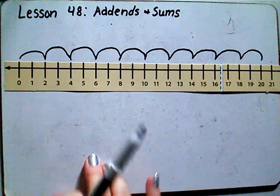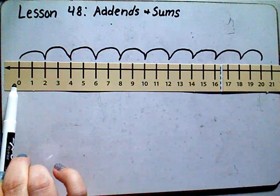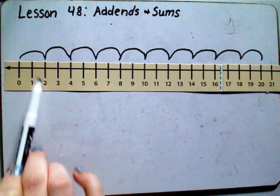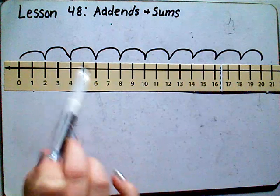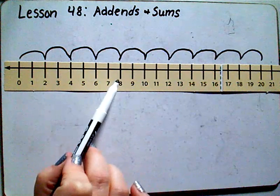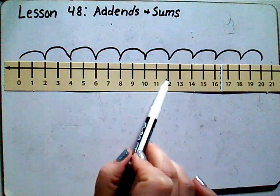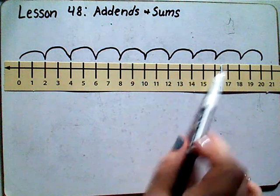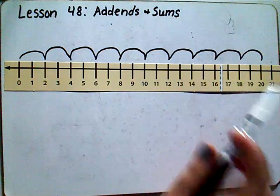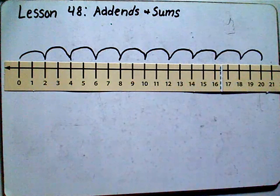Let's count by twos, ready? Starting at zero: zero, two, four, six, eight, ten, twelve, fourteen, sixteen, eighteen, and twenty. Good job, that was counting by twos.